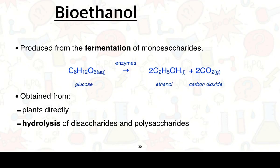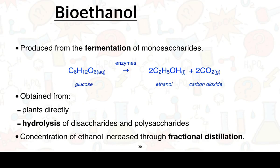Once we have produced our ethanol, it's usually not of a very high concentration. If we want to increase its purity and concentration, we can carry out fractional distillation, separating the ethanol from the mixture of components from fermentation.